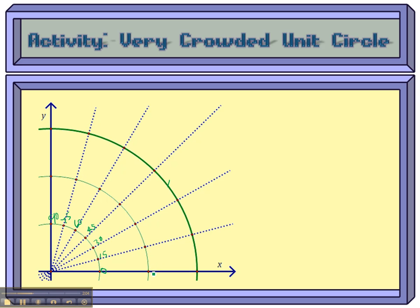Right here, we're going to put 0 radians, π over 12, π over 6, π over 4, π thirds, 5π over 12, and π halves.